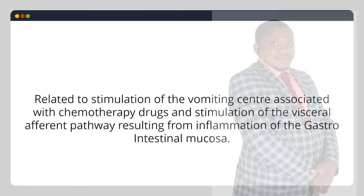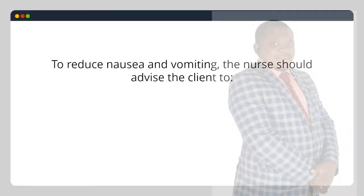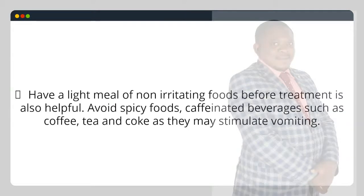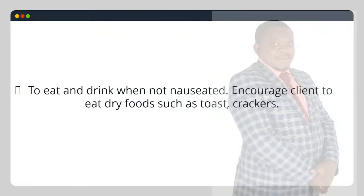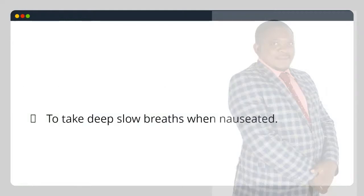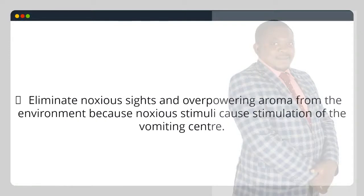Nausea and vomiting — related to stimulation of the vomiting center associated with chemotherapy drugs and stimulation of the visceral afferent pathway resulting from inflammation of the gastrointestinal mucosa. To reduce nausea and vomiting, the nurse should advise the client to: have a light meal of non-irritating foods before treatment; avoid spicy foods and caffeinated beverages such as coffee, tea and cola as they may stimulate vomiting; record fluid intake to ensure adequate volume is consumed and retained; avoid drinking fluids with meals; eat and drink when not nauseated; encourage dry foods such as toast and crackers; take deep slow breaths when nauseated; eliminate noxious odors and overpowering aromas from the environment.